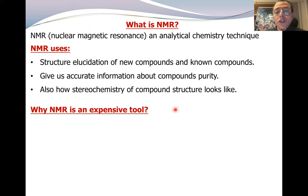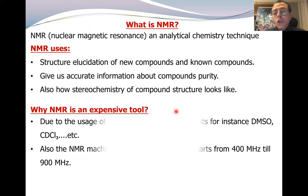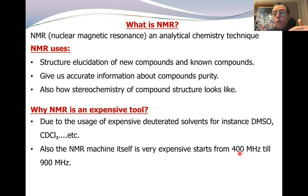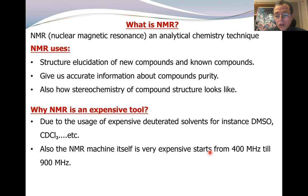Is NMR very expensive? Yes. Why? Two reasons. We use deuterated solvent, not normal solvent, and it is extremely expensive. Moreover, the machine itself is very expensive. When it is 400 MHz, 500 is more expensive, and 600 or 900 MHz is the most expensive one. We should remember also that we have to do maintenance of the machine, and this costs money as well.